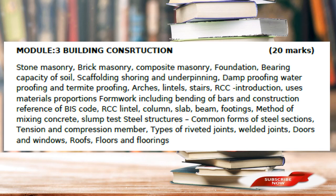Module 3 is building construction. Topics include: stone masonry, brick masonry, composite masonry, foundation, bearing capacity of soil, scaffolding, shoring, underpinning, damp proofing, waterproofing, termite proofing, arches, lintel, stair, RCC introduction — uses of material, proportions, formwork including bending of bars, construction reference to the IS code, RCC lintel, slab, beam, footing, method of mixing concrete, slump test, and RCC.